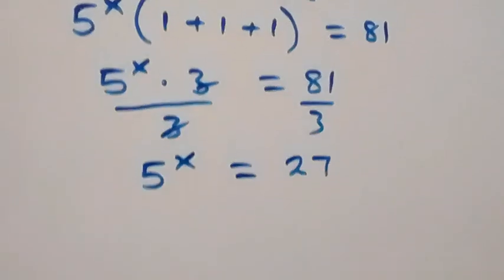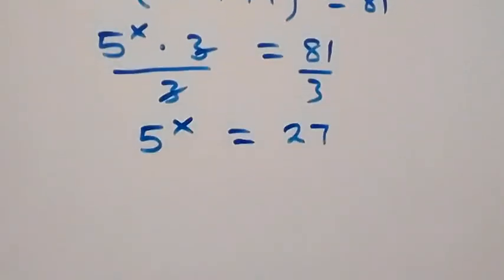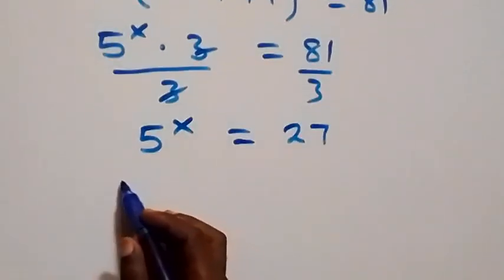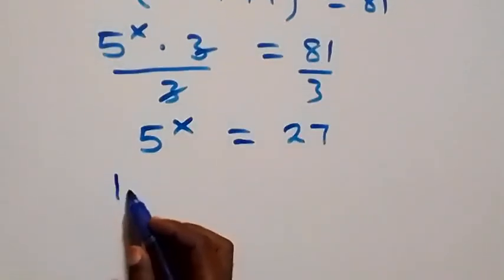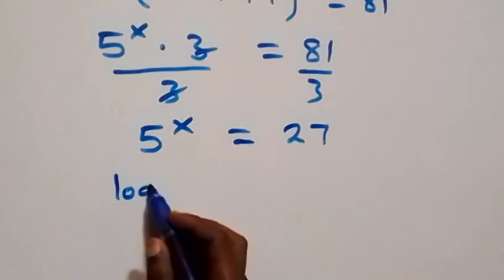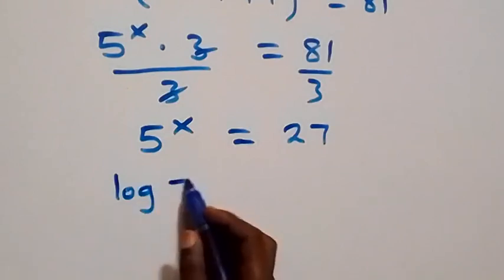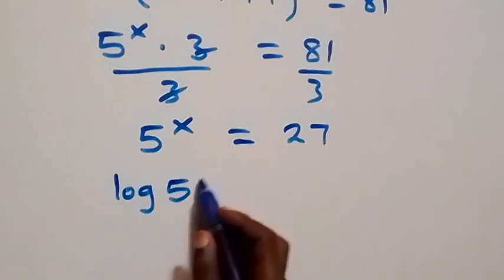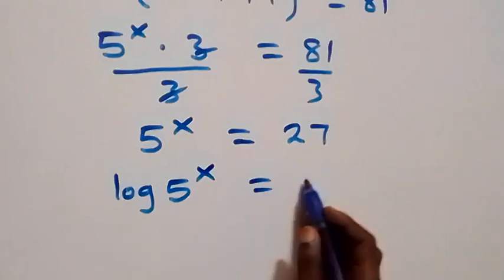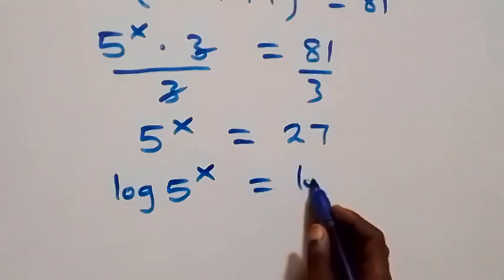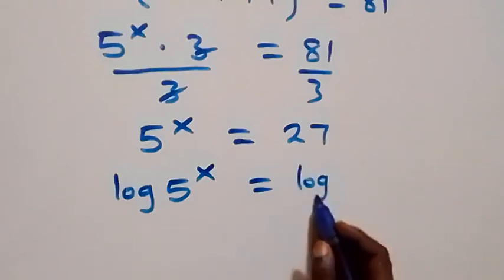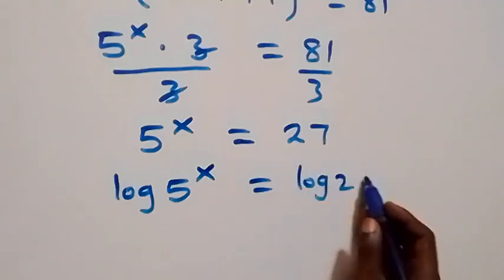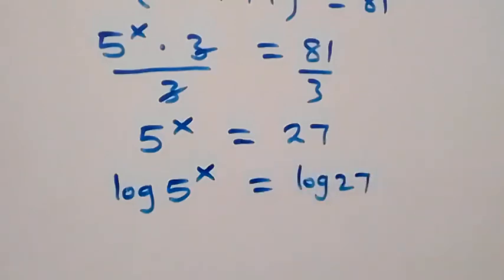The next step is to take the logarithm on both sides. We have log of 5 raised to power x equals log of 27.